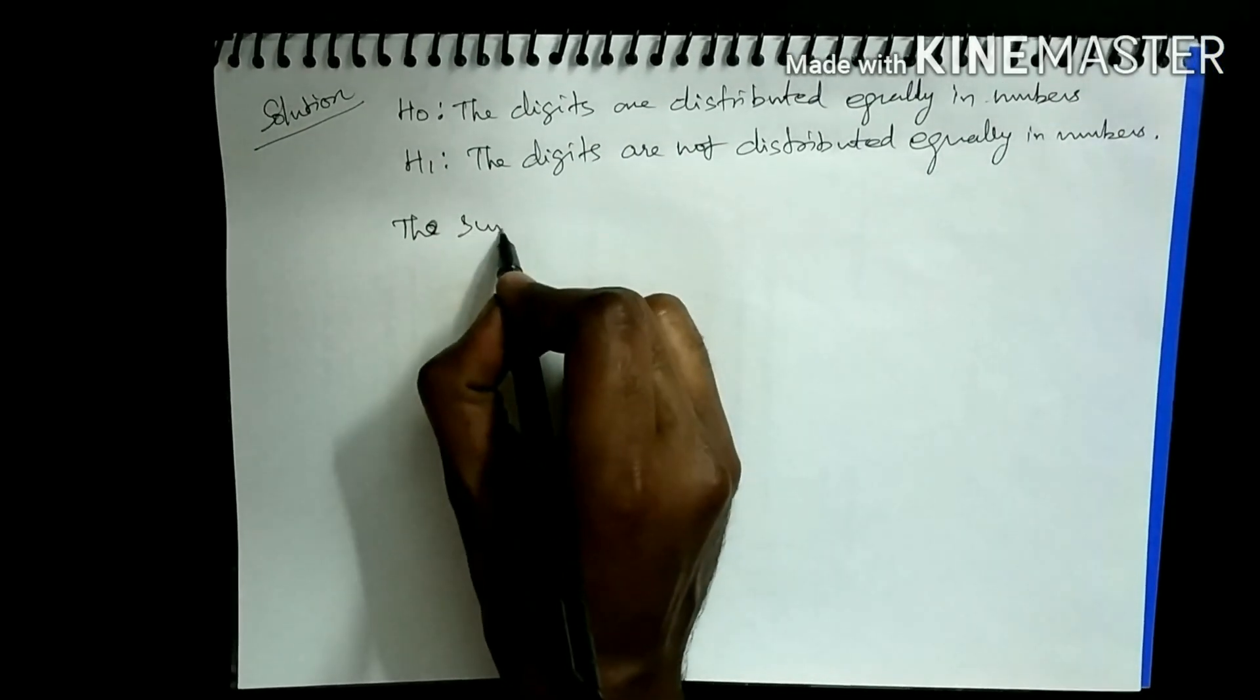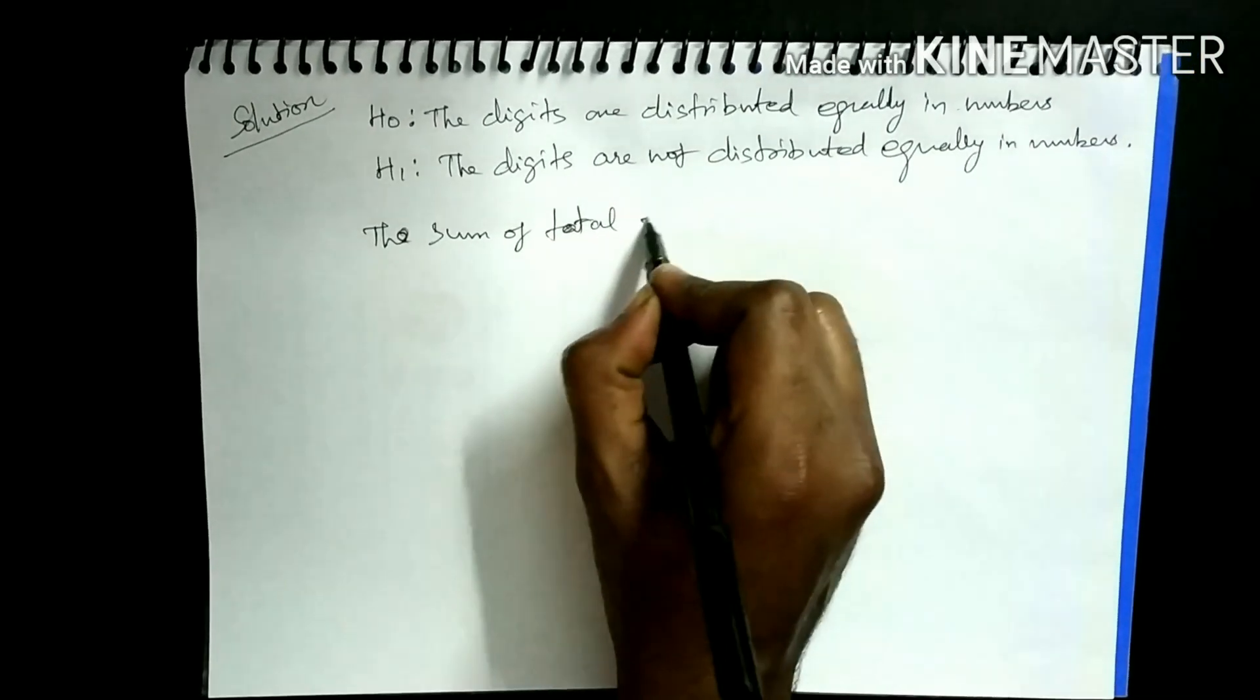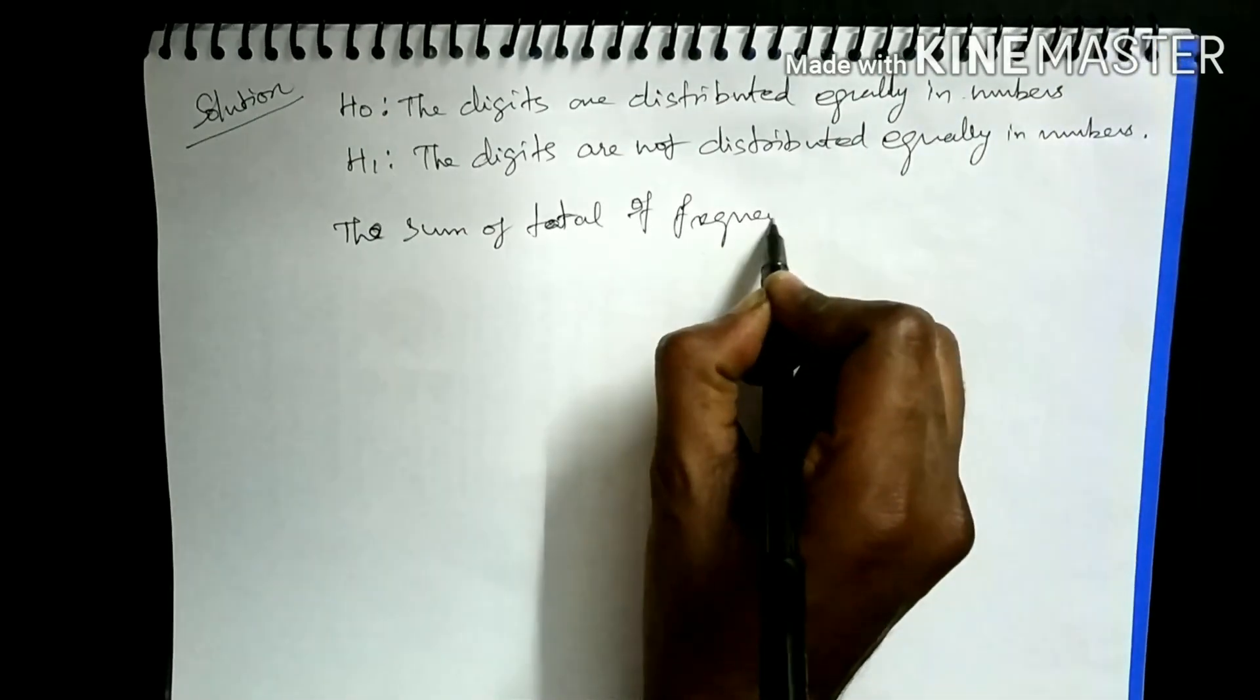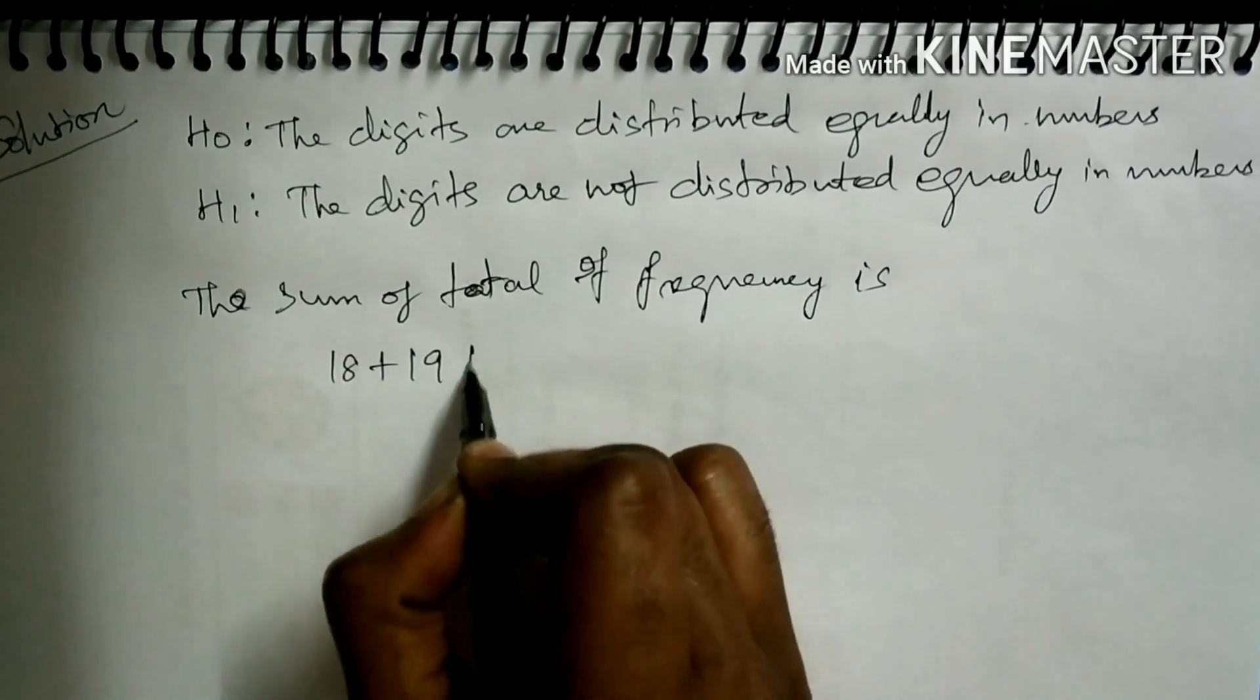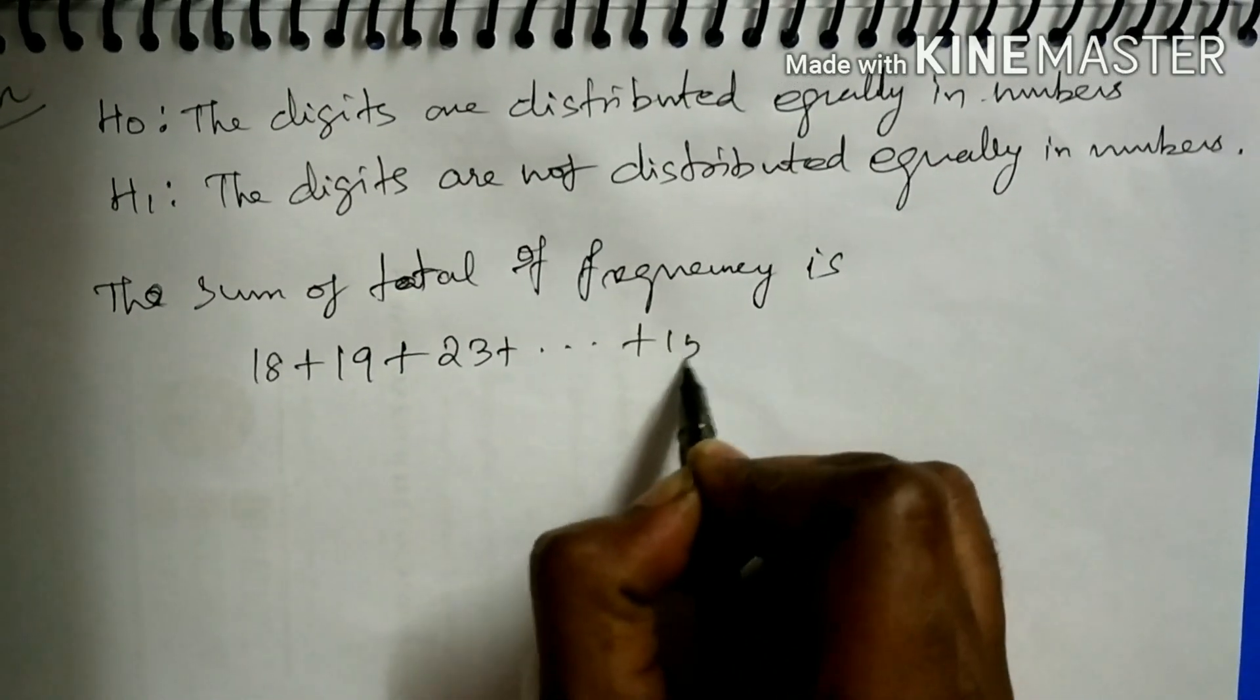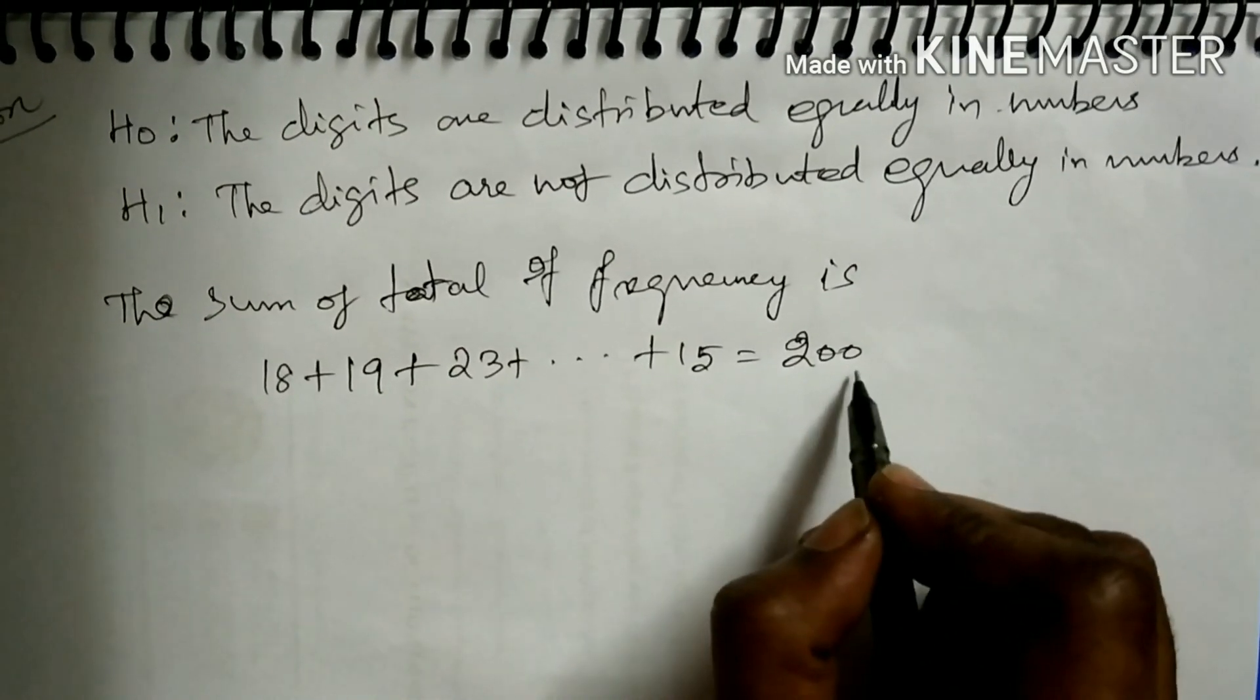The sum of total of frequency is just add 18, 19, 23, plus up to 15. We would get 200 because we are taking 200 digits.